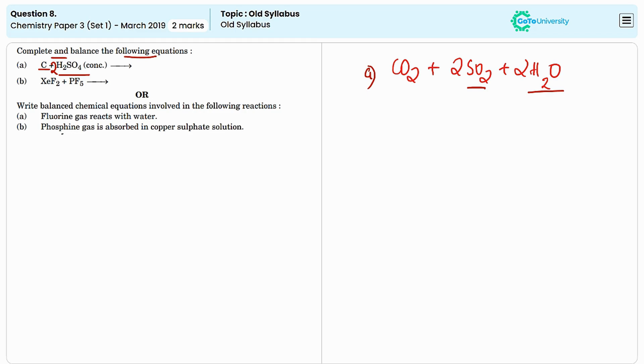The second equation is XeF2 reacting with phosphorus pentafluoride. The product is a complex containing XeF and PF6.